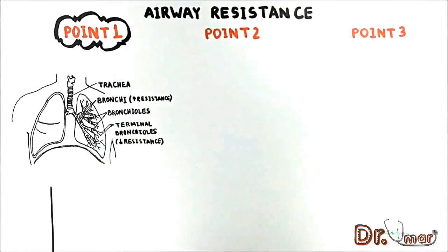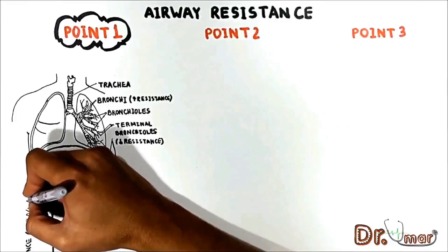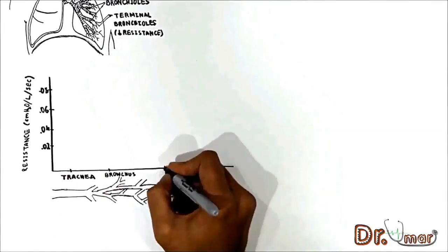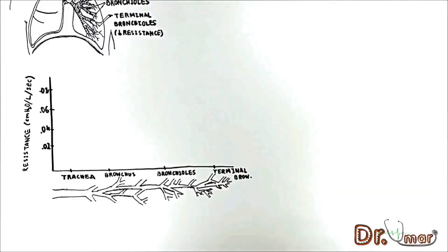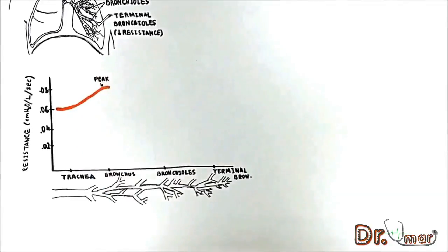In USMLE books you may find a graph of resistance which I will draw here. On one axis we have resistance and on another the airways. Again, the larger airways represent more resistance. The peak resistance is in the first and second bronchi.